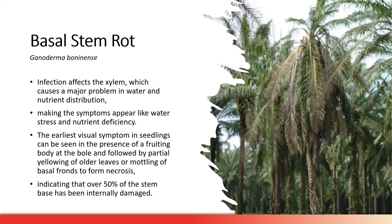After that, the fungi grow the fruiting bodies. The fruiting bodies are actually the final stage of Ganoderma growth — badan buah ini adalah fase pertumbuhan yang paling akhir. That is why when the fruiting body appears, it means we are late because the development of the disease has already become very serious.